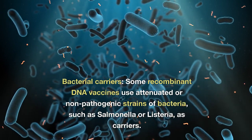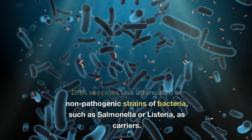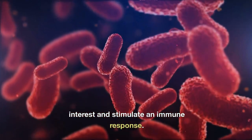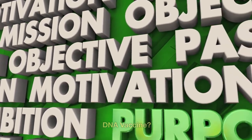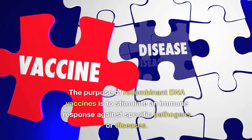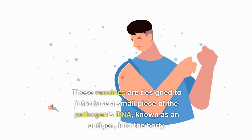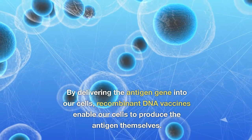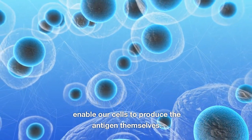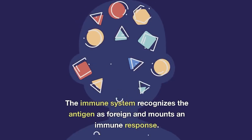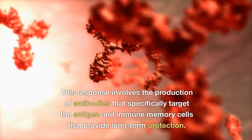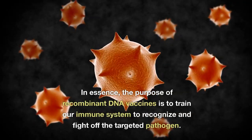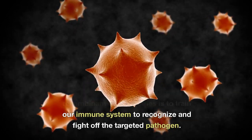Bacterial carriers are another option. Some recombinant DNA vaccines use attenuated or non-pathogenic strains of bacteria, such as Salmonella or Listeria, as carriers. These bacteria can be genetically engineered to express the antigen of interest and stimulate an immune response. The purpose of recombinant DNA vaccines is to stimulate an immune response against specific pathogens or diseases by introducing a small piece of the pathogen's DNA — the antigen — into the body, enabling our cells to produce the antigen themselves. The immune system then recognizes the antigen as foreign and mounts an immune response, producing antibodies and immune memory cells that provide long-term protection. In essence, the purpose is to train our immune system to recognize and fight off the targeted pathogen.